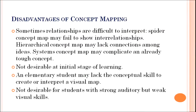There are certain disadvantages also. Sometimes relationships are difficult to interpret — for example, a spider concept map may fail to show interrelationships of the sub-concepts. A hierarchical concept map may lack connection among ideas. A systems concept map may complicate an already tough concept, so they are to be used very cautiously. They are not desirable at the initial stage of learning — most historians and scholars agree that they are for university level students, as an elementary student may lack the conceptual skill to create or interpret a visual map.